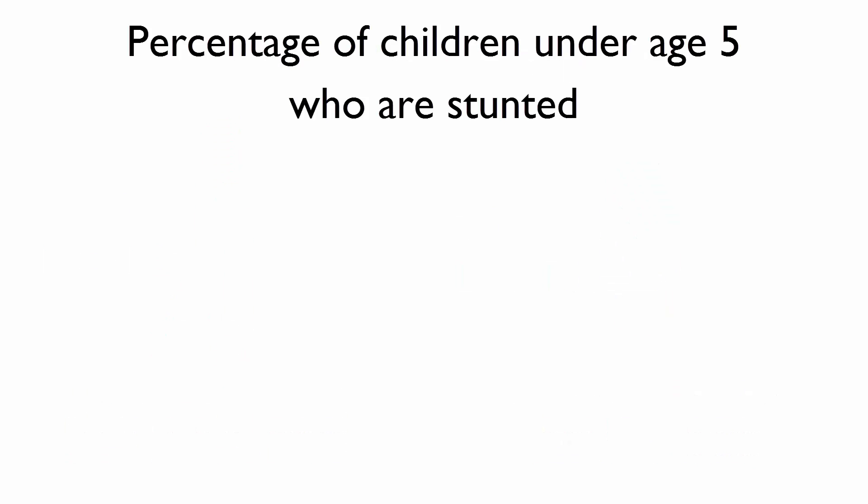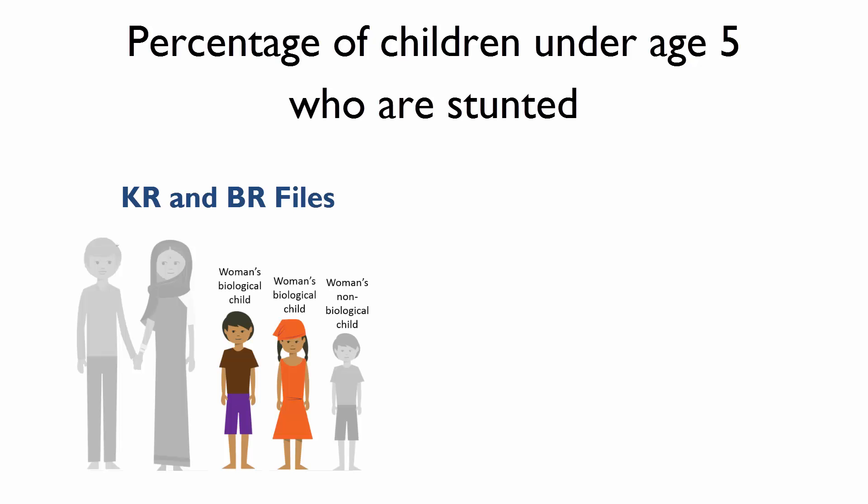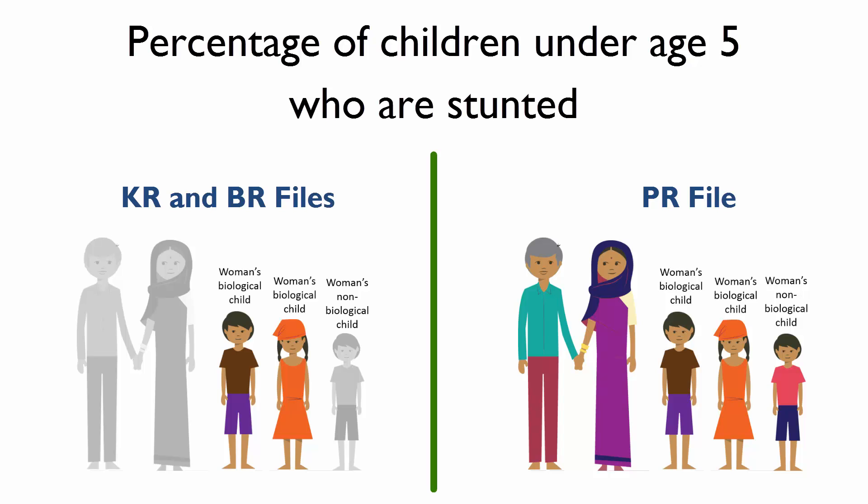Another example: what if we wanted to calculate the percentage of children under age 5 who are stunted? This is a standard nutrition indicator among children under 5. The KR and BR files include only those children whose mother was interviewed, or de facto mothers, while the PR file includes all children who were in the household, whether or not their mother was interviewed. The decision of which file to use should be based on your analytical questions as well as your data restrictions. Height and weight information is collected in the biomarker questionnaire, and the sample of all children in the PR file may be less biased than the sample of children of interviewed women in the KR file. So the DHS standard is to tabulate nutrition indicators like wasting and stunting in the PR file, but add characteristics linked from the KR file for children whose mothers were interviewed.